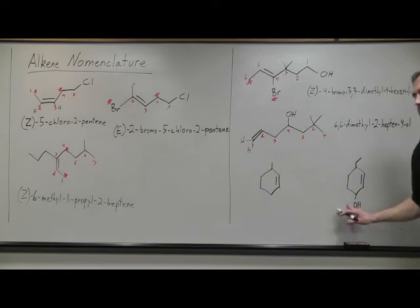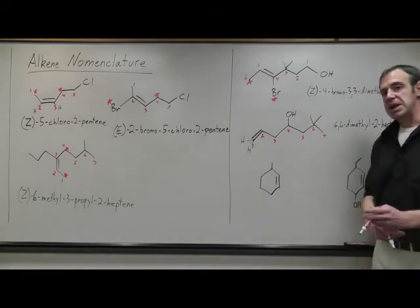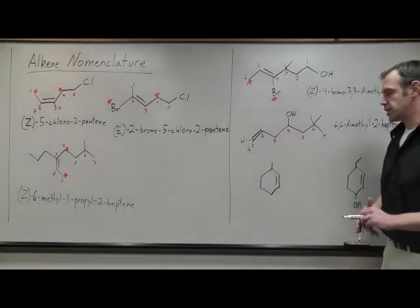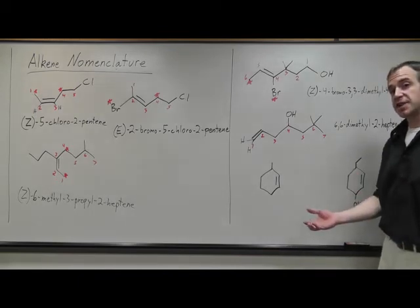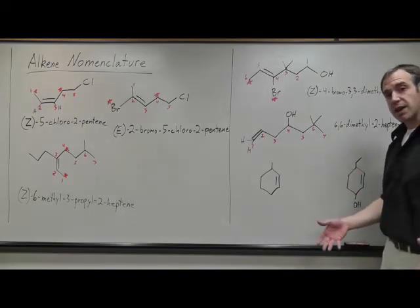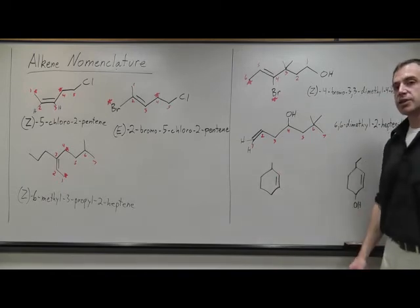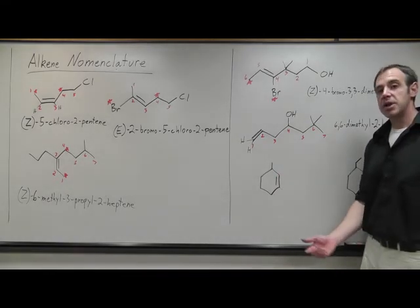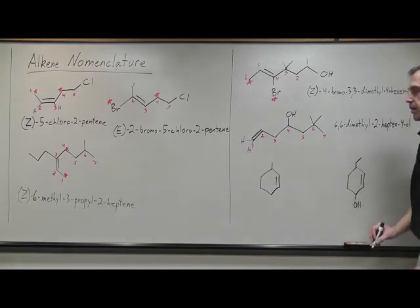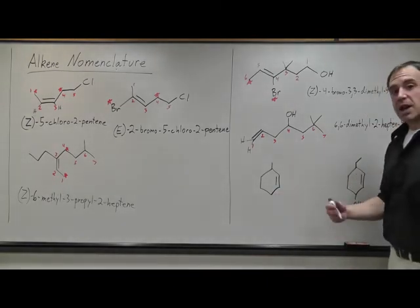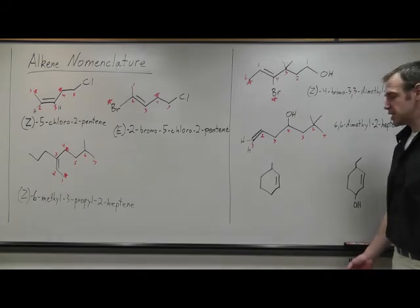We can do cyclic molecules as well. Typically E or Z is not included in a cyclic molecule's name because the molecule cannot physically be trans or an E conformation. They're always Z conformation. So that's typically left out. But it's perfectly fine if you include it in the name. It's just not necessary. This would be cyclohexane. So it just becomes cyclohexene.